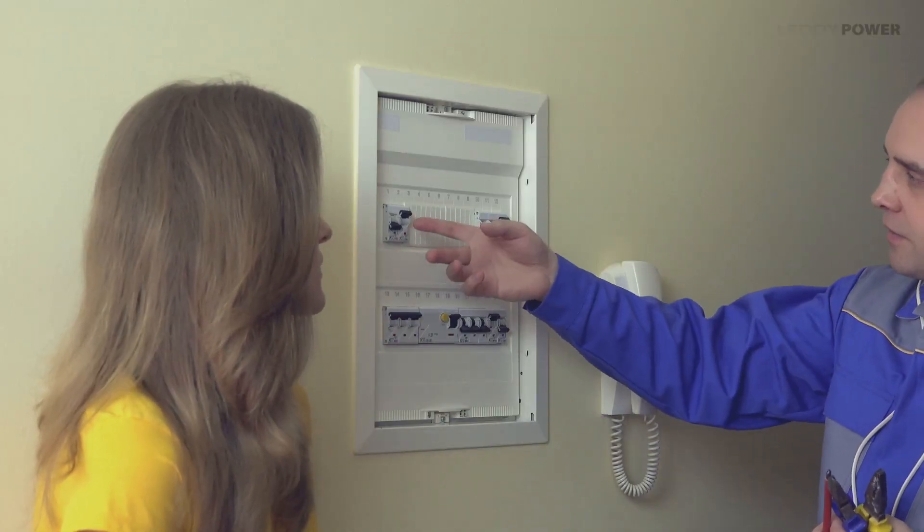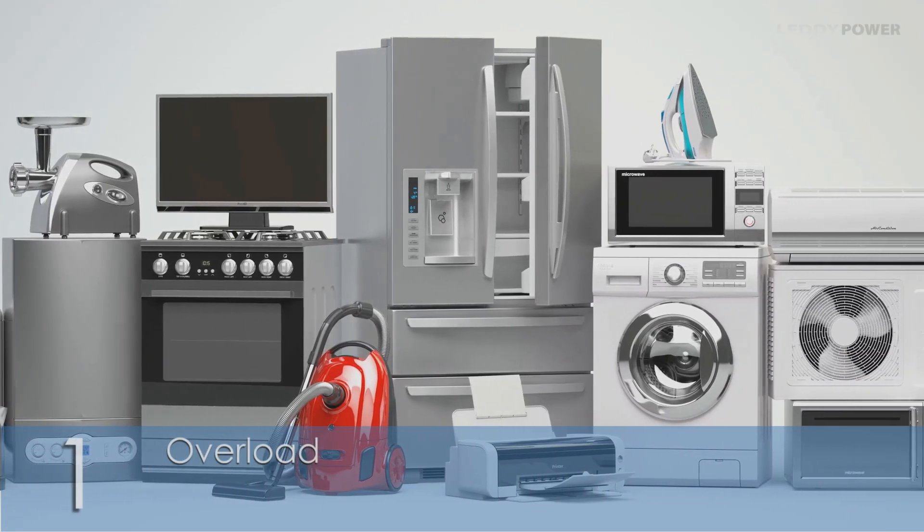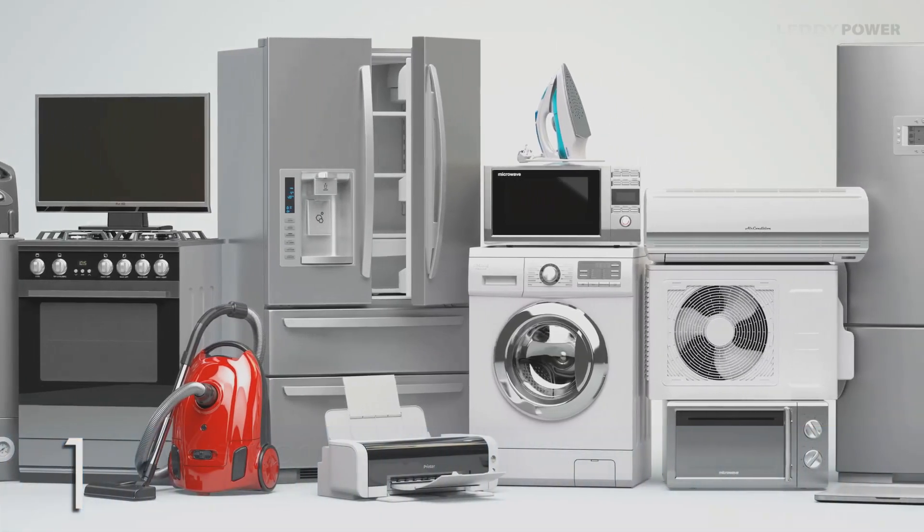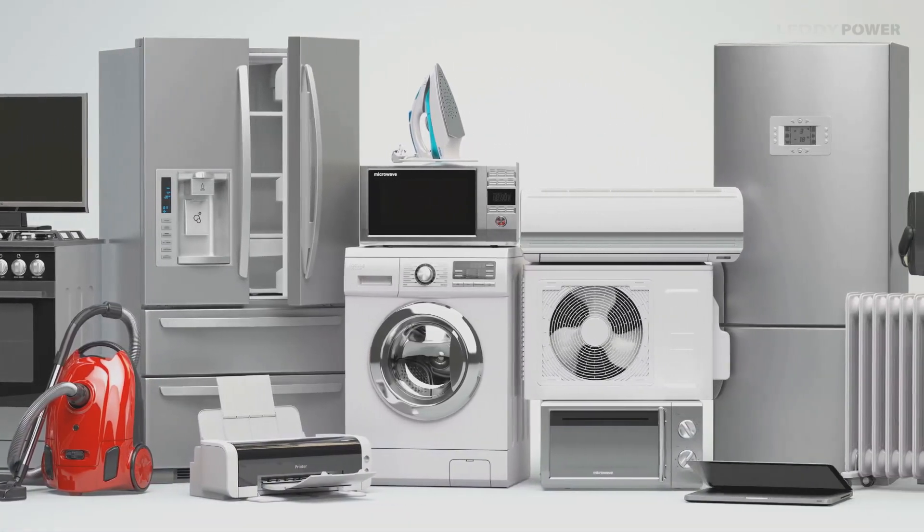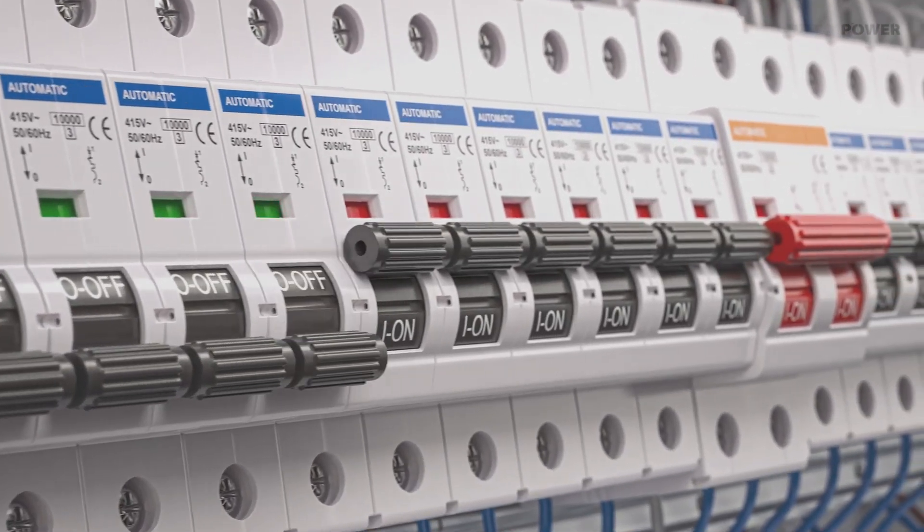Frequent tripping of generator breaker could point to one of the following issues. Number one, overload. Adding too many devices or high-power appliances may overload the generator circuit. This may prompt the breaker to trip to prevent potential damage to vital generator components.